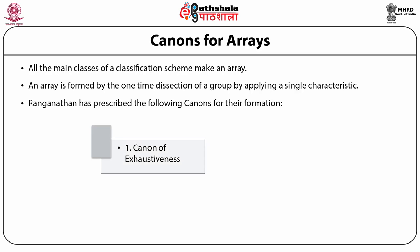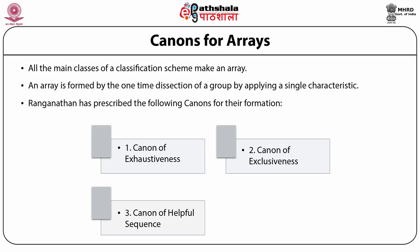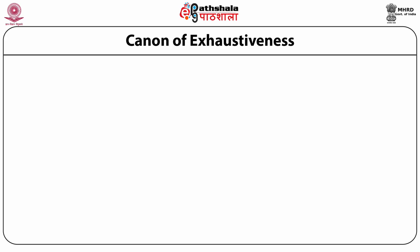The canons are: (1) Canon of Exhaustiveness — the array should be exhaustive of the entire universe, nothing should be left out. (2) Canon of Exclusiveness — each array should be exclusive; one entity should not belong to more than one array. (3) Canon of Helpful Sequence — members in an array should be arranged in some order helpful to the users. (4) Canon of Consistent Sequence — the order once chosen for a group should remain the same for the sake of consistency and uniformity. Now let us explain the meaning and implications of each canon.